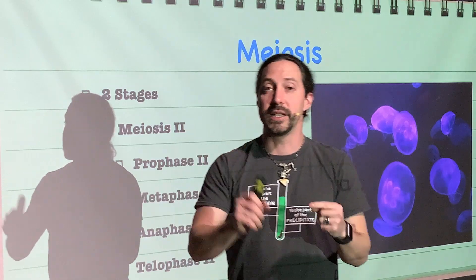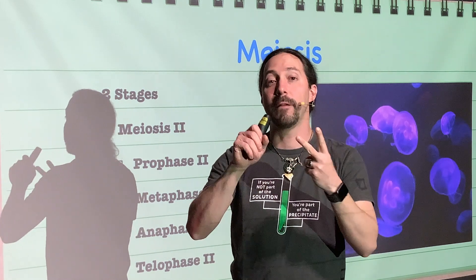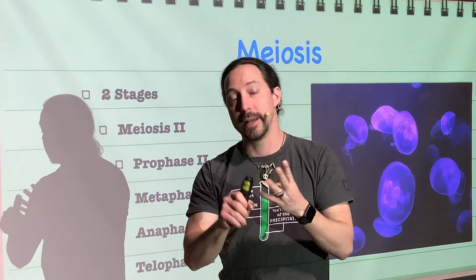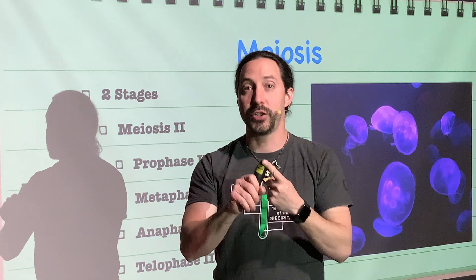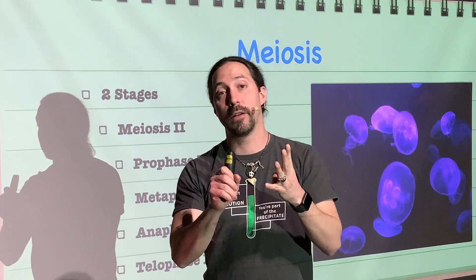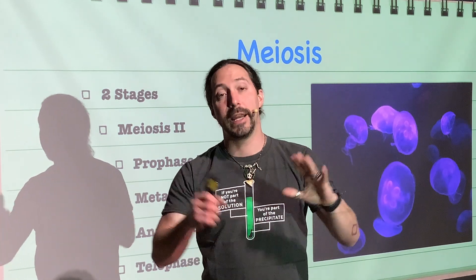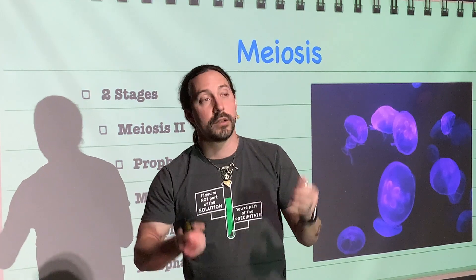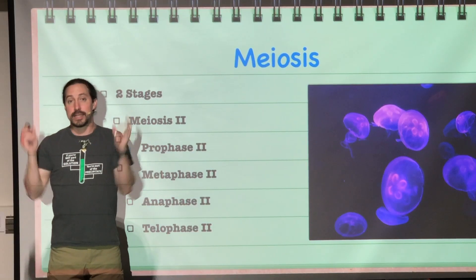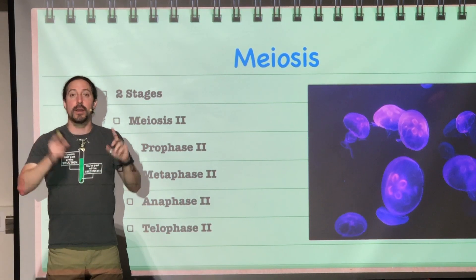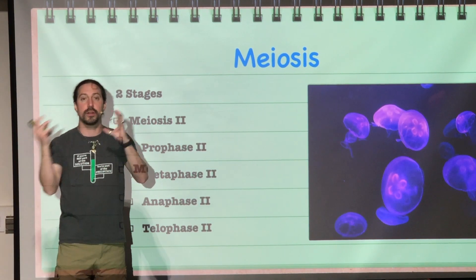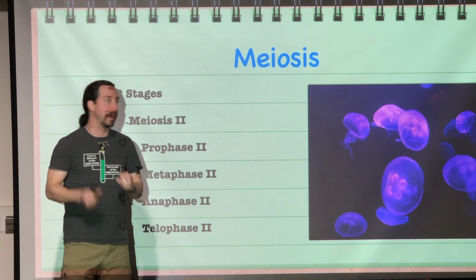Meiosis II has prophase II, metaphase II, anaphase II, telophase II, in that order. They are very similar in what happens, but the names are going to tell you which stage we're talking about.